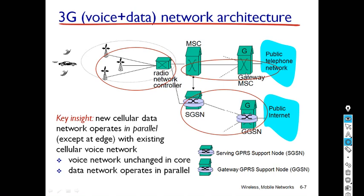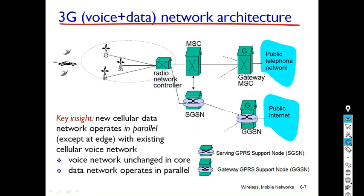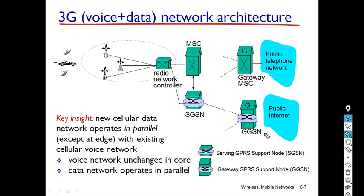Now we will discuss the various components of the 3G core network one by one. The core network contains two components: SGSN and GGSN. SGSN is called the Serving GPRS Support Node, and GGSN is known as the Gateway GPRS Support Node.